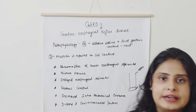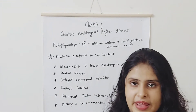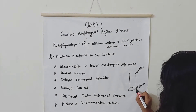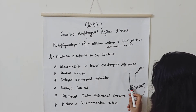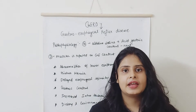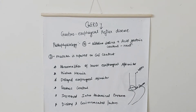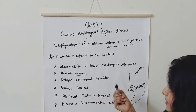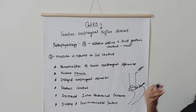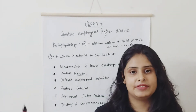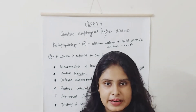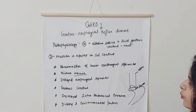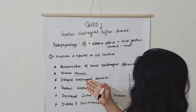Hiatal hernia is when the gastric content or a portion of the stomach protrudes out of its normal cavity. Normally, the stomach is in the abdominal cavity, but when the stomach invades or herniates upward into the thoracic cavity, this causes hiatal hernia contributing to GERD.